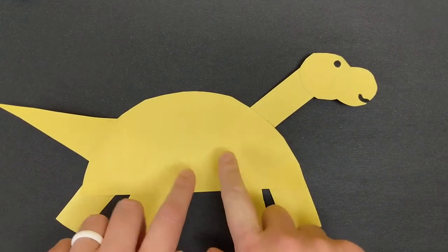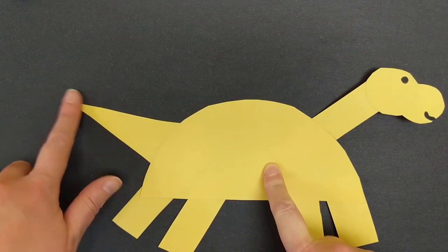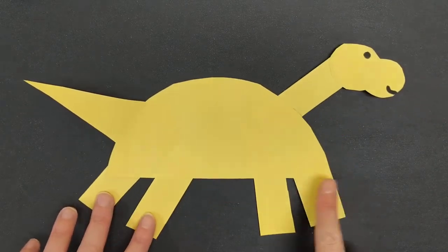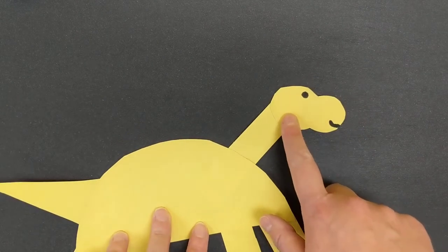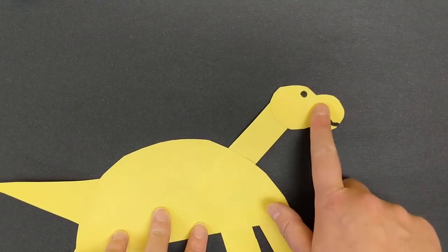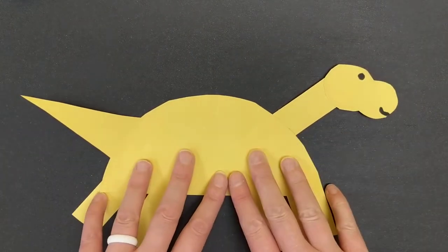So can you see some of our shapes that we have here? We have a half circle. We have a triangle. We have some rectangles for our little dinosaur's legs, another rectangle here, and these are just two circles that I connected together. So let me show you how that looks if you put it on your paper.